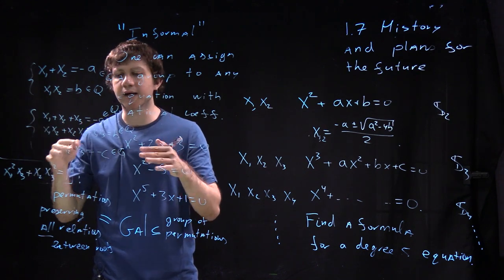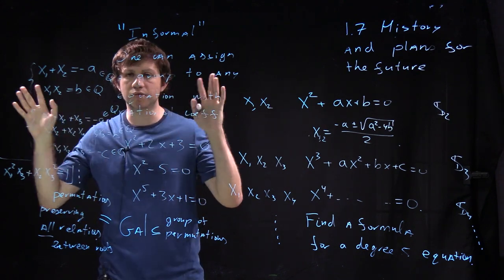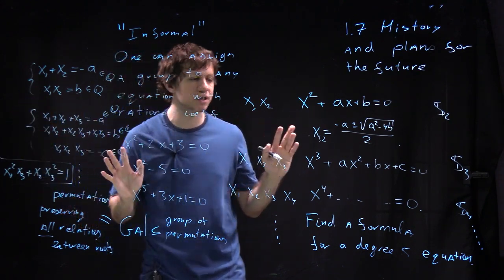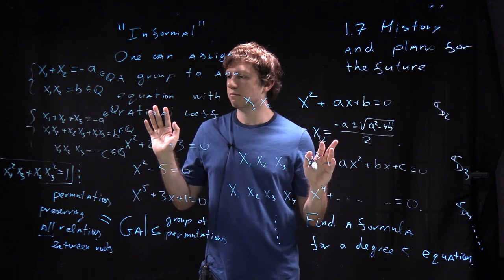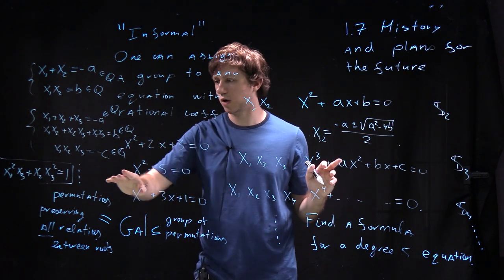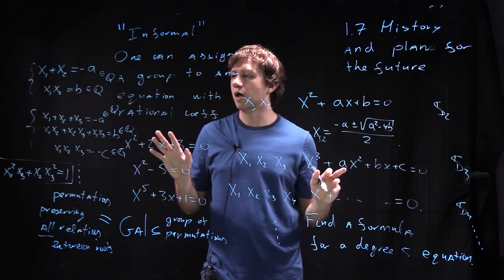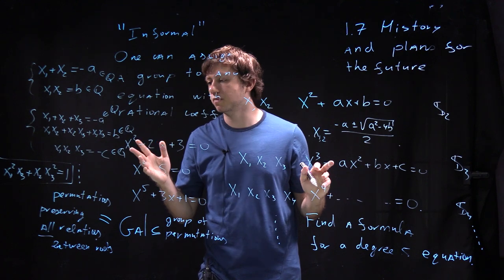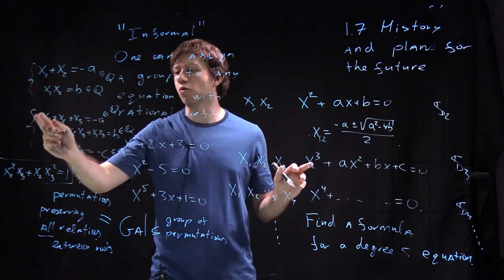And if you take an equation where roots are kind of absolutely independent random roots then you can do any permutation. There are just no such relations with rational coefficients or actually there are some but they will be corollary of those.